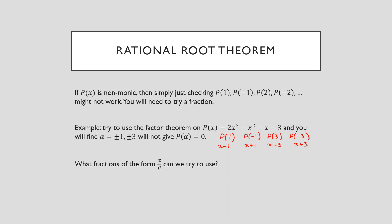The question is: what fractions do we use in our substitution into our polynomial? What fractions do we use in our remainder theorem, and how do we get those fractions from the polynomial? We're going to have to try p of 1 over something, or p of 3 over something. The question is: what is that beta value that we've got to use now?